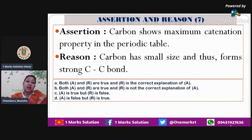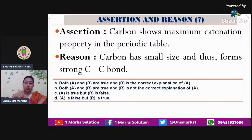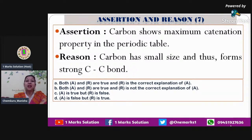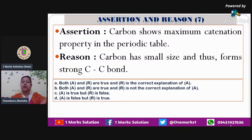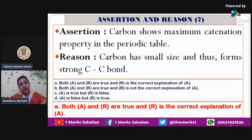The reason states that carbon has small size and thus forms strong carbon-carbon bonds. Carbon has two shells — the nucleus force of attraction is very strong. Because carbon has a small size, it can create a bond with another carbon more effectively. So assertion is true, reason is also true, and reason is definitely explaining the assertion — because of its small size it is able to form that strong C-C bond.